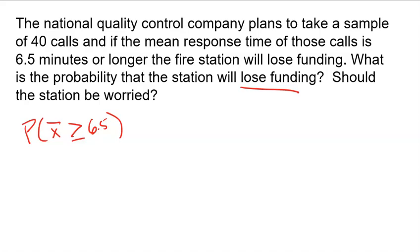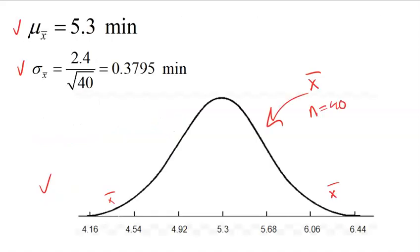So I'm finding the probability that a sample mean, X bar, comes back greater than 6.5 minutes. To do that, I need to find the Z score for 6.5 minutes. So I'm going to do 6.5 minus 5.3, and I'm going to divide by the standard deviation, which I found to be 0.3795.